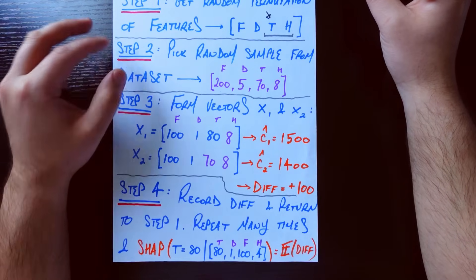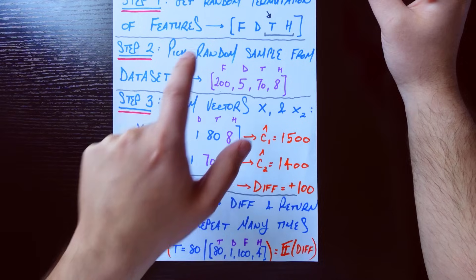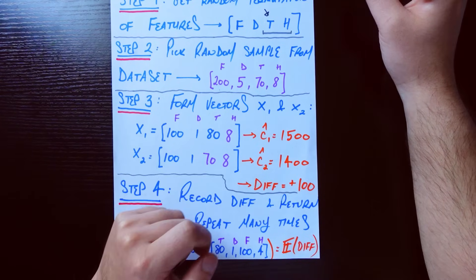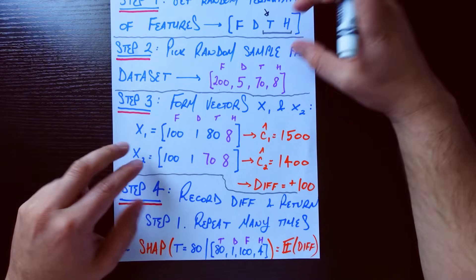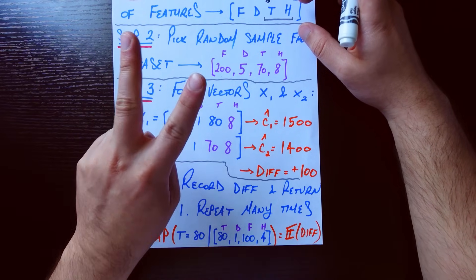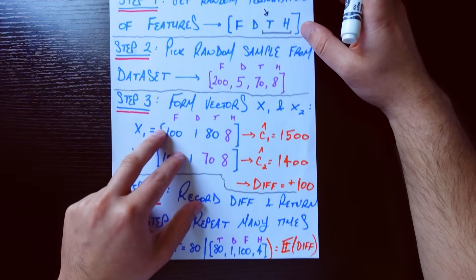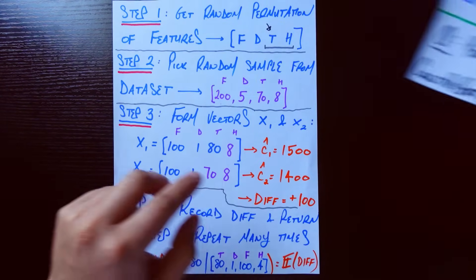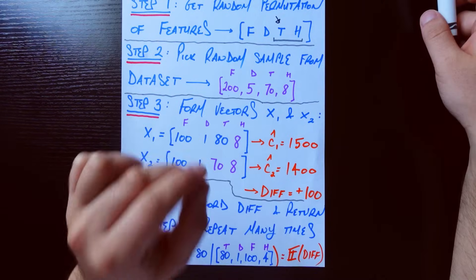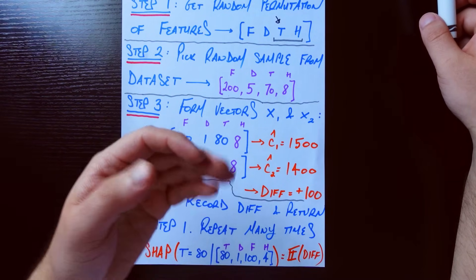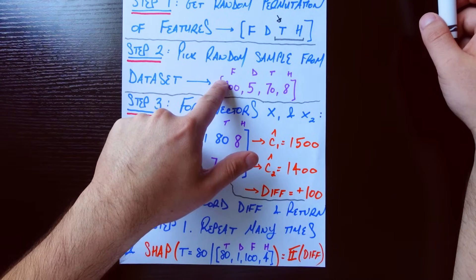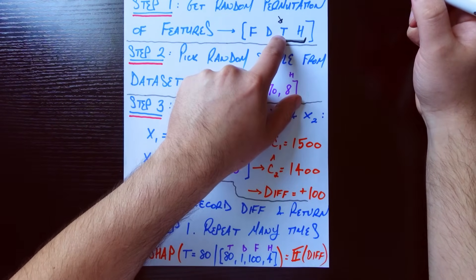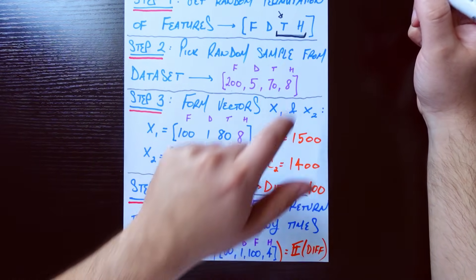Step two: we pick a random sample from the dataset — a completely random sample we pluck from it. Let's say it looks like this: number of flights is 200, day of the week is 5, temperature is 70 degrees, and number of hours open is 8 hours. Now we're going to form two Frankenstein vectors, taken partially from our original sample that we care about and from this random sample we just pulled. The crucial thing is that which features come from which vector — whether the randomly chosen one or the original — is determined by the bracket we drew.